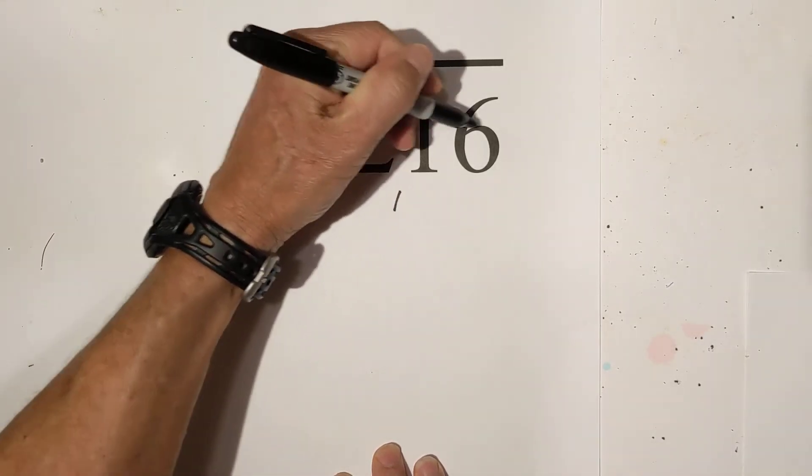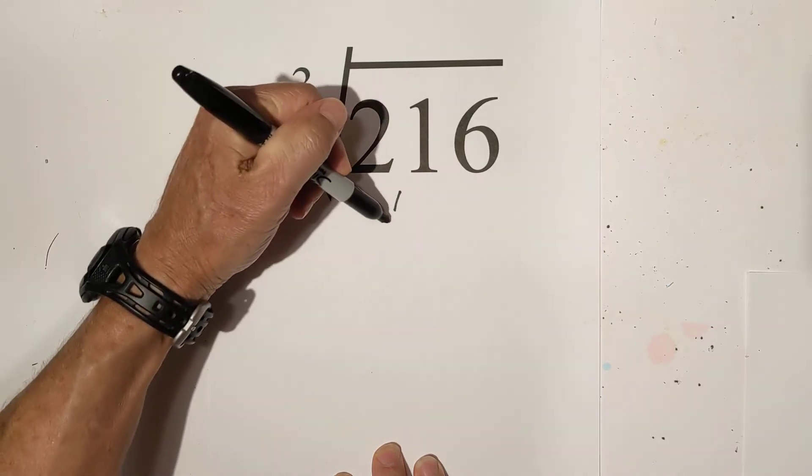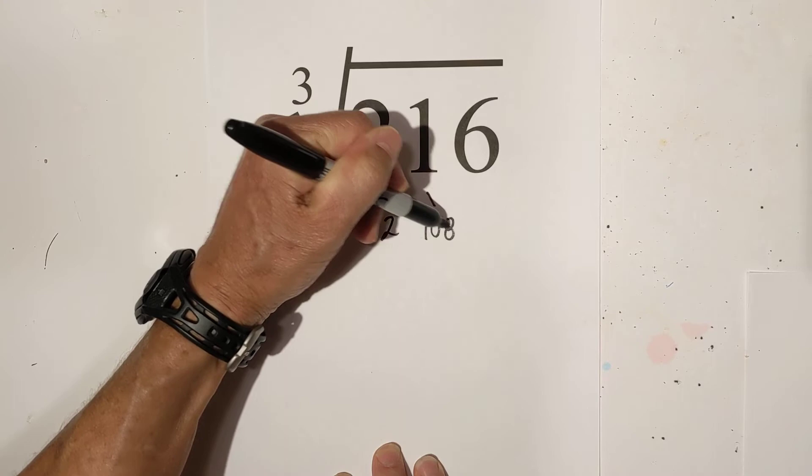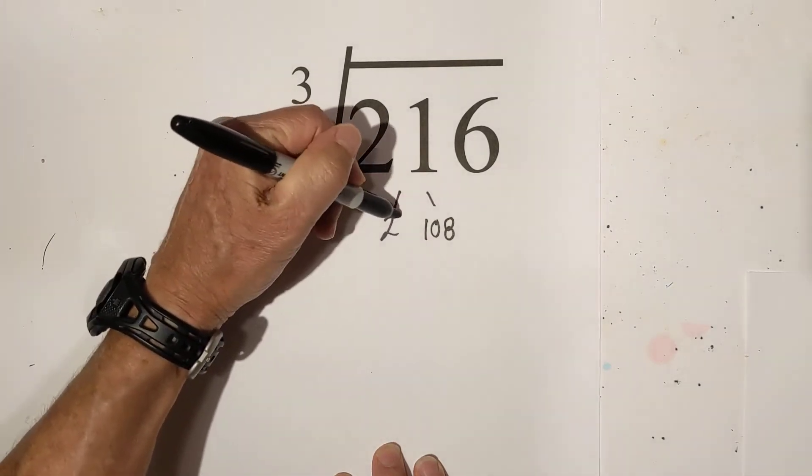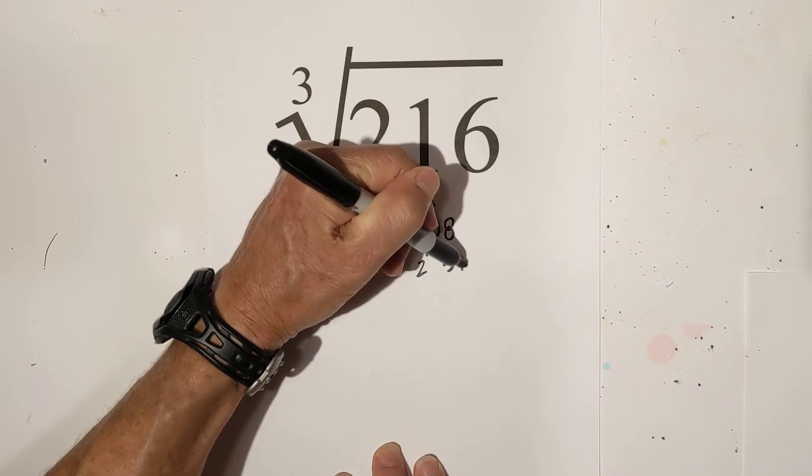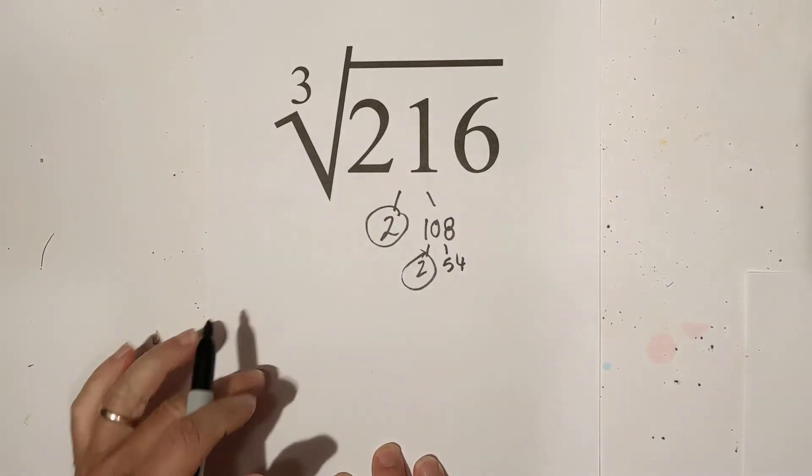I'll get started. I know since it ends in an even number I can divide it by 2 and 2 times 108 equals 216. Circle the 2 because it is prime and then 2 times 54 equals 108. Circle the 2, it's prime.